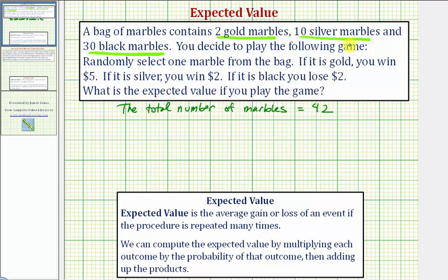Now there are three outcomes. You can win $5 if you select gold, you can win $2 if you select silver, and you can lose $2 if you select black.